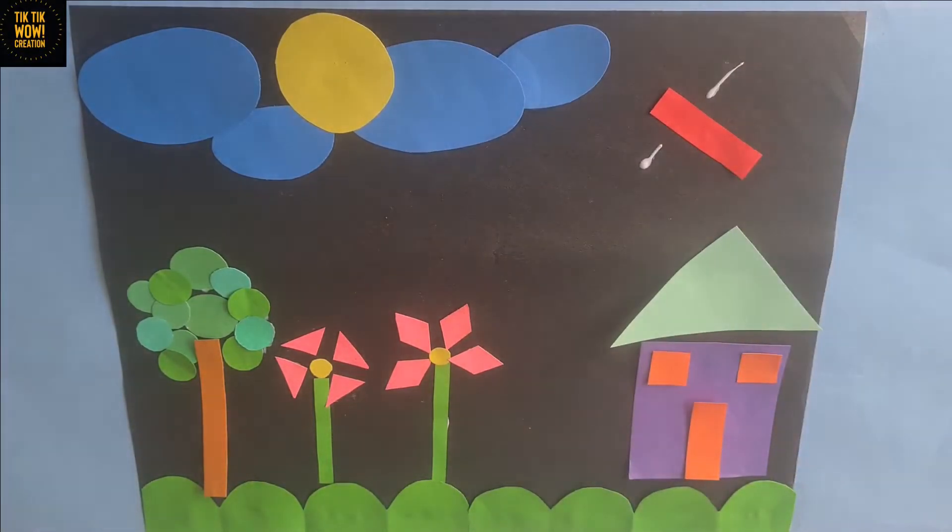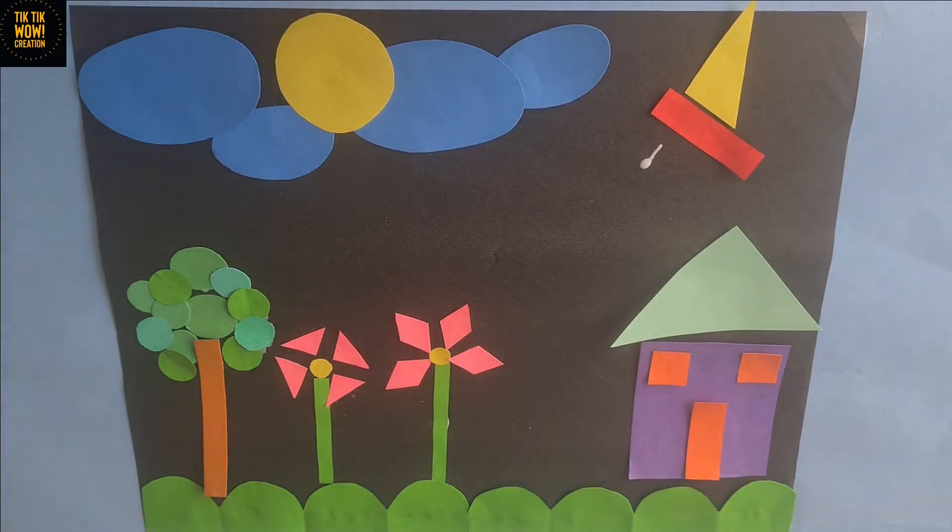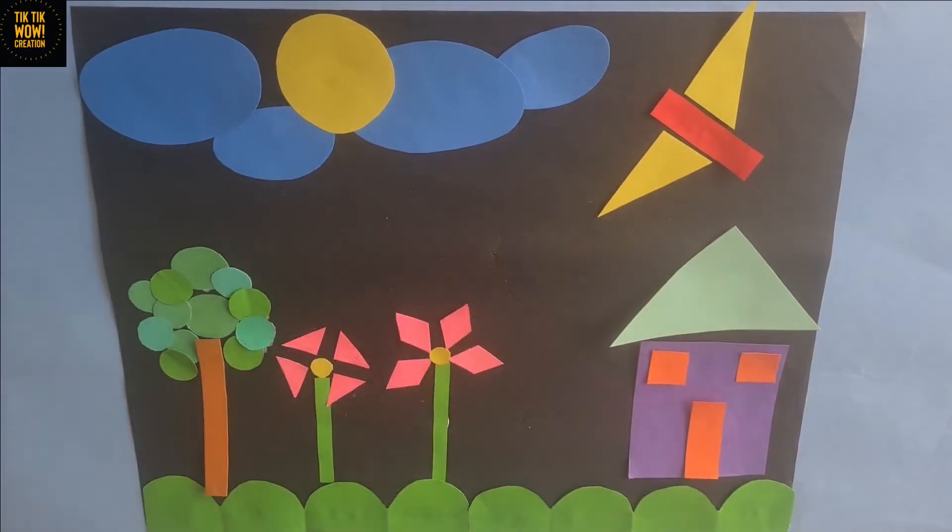Now I am going to make a bird to make this picture more lively. For this, use a red rectangle for body of the bird.